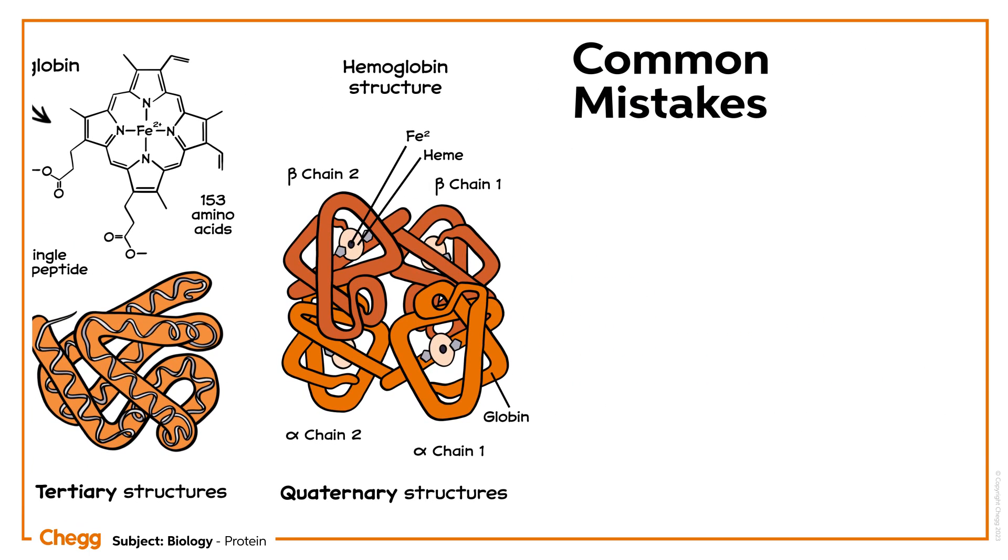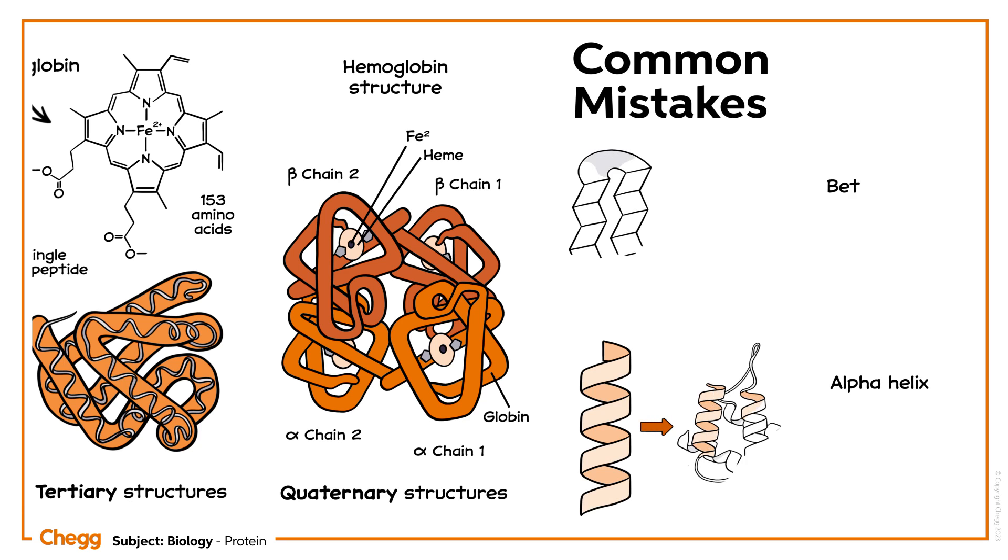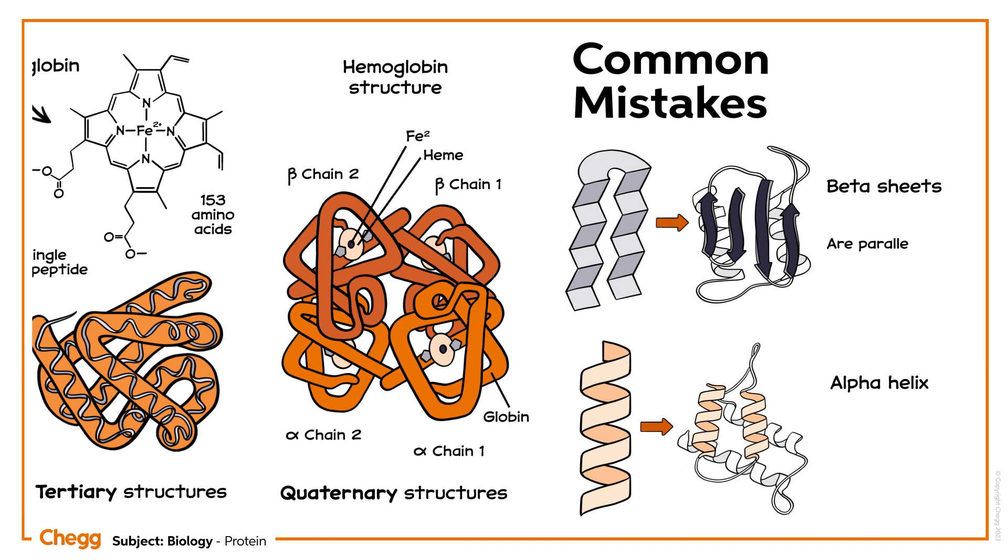We usually get confused between the alpha and beta structures of proteins. Always remember, beta strands are parallel with hydrogen bonded to each other, whereas the hydrogen bonds in alpha helices are parallel to each other and anti-parallel to the helical axis. Therefore, the beta structure is pleated, and alpha helix is a coiled structure.